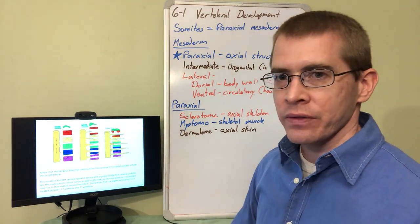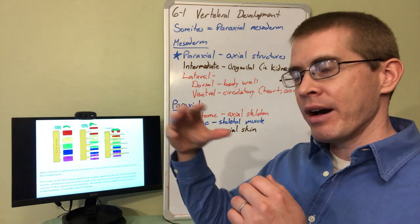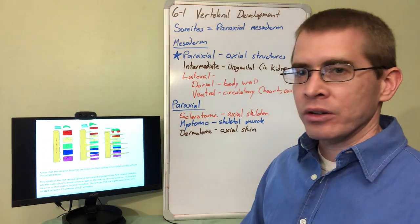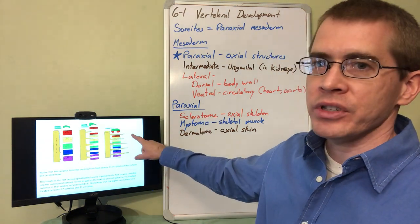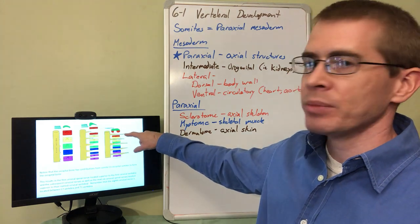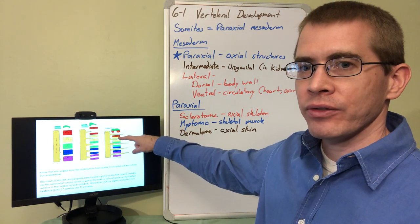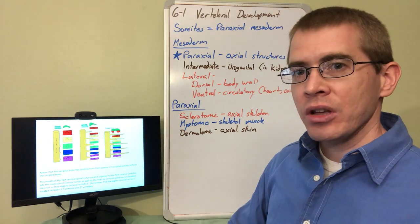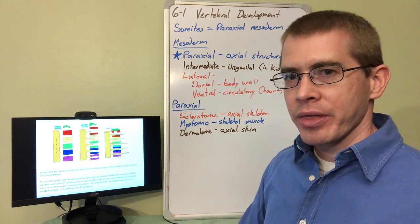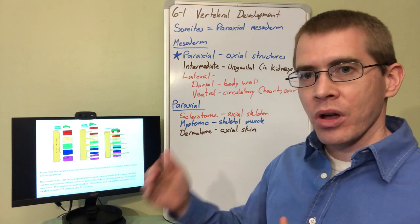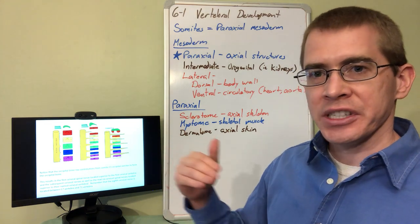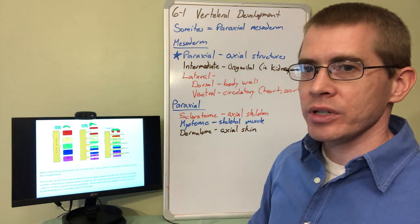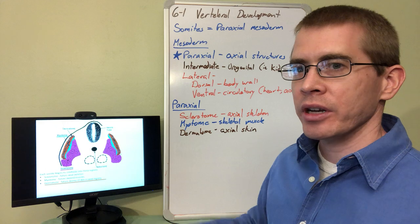This results in how we number the spinal nerves. The first spinal nerve exits above the C1 vertebra, between the occipital bone and C1. If you count down and continue this process, we have to include an eighth cervical spinal nerve below the C7 vertebra. But there's no C8 vertebra—we go directly into the thoracic vertebrae. This is a consequence of the division that occurs during development.